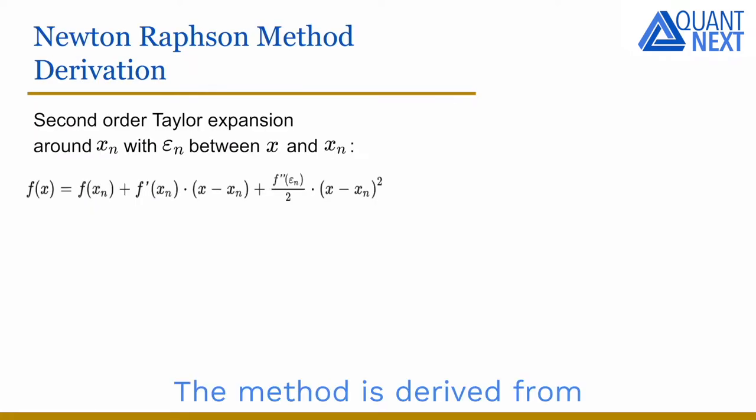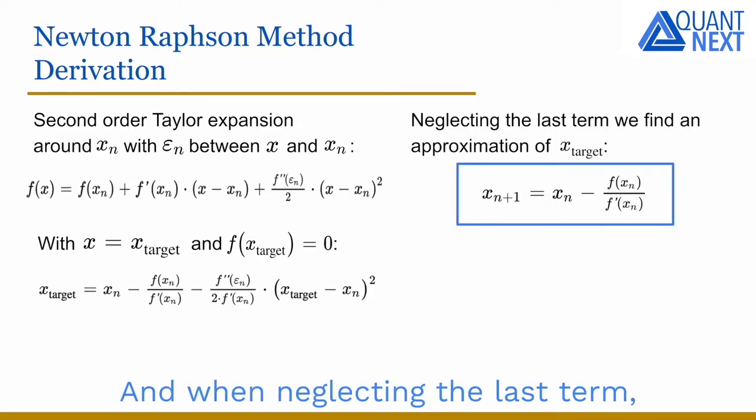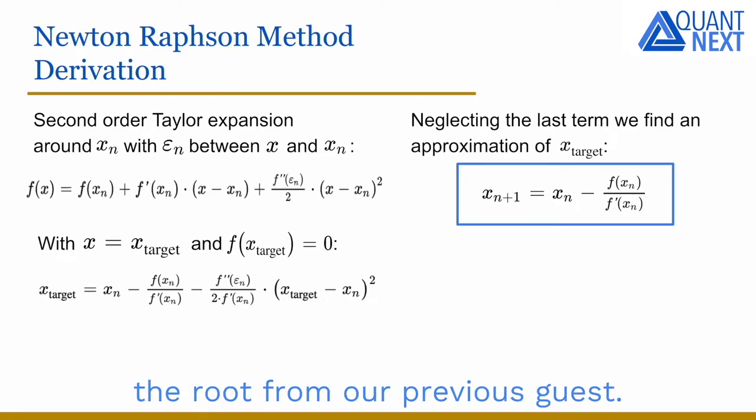The method is derived from a simple second-order Taylor expansion of the function f around xn. After some rearrangements, we get the relationship between the root of the function and xn. And when neglecting the last term, we find our new estimation of the root from our previous guess.